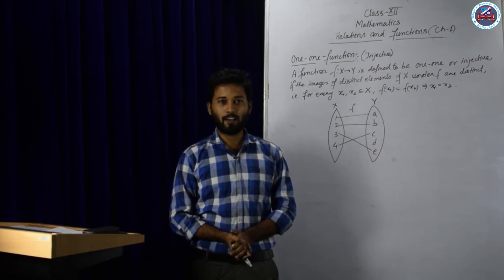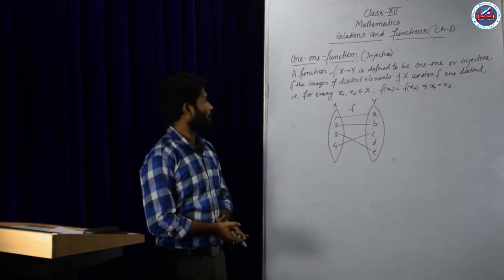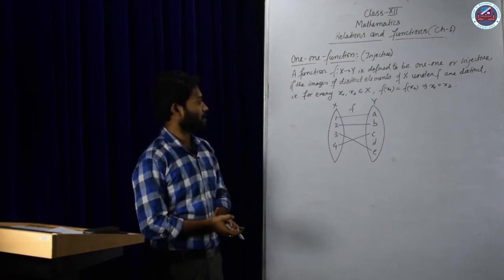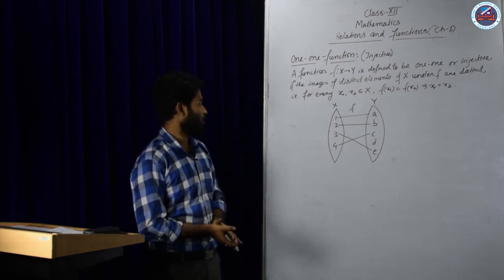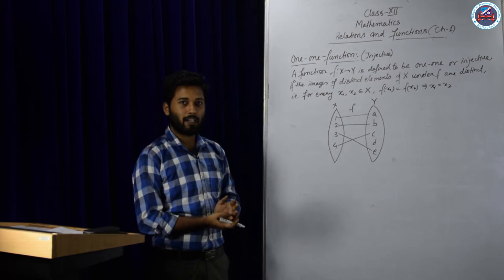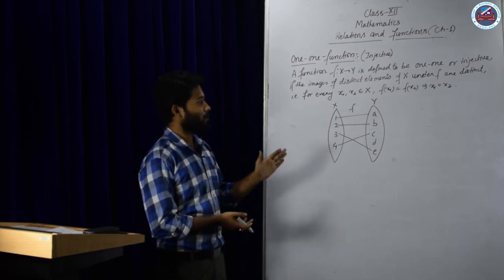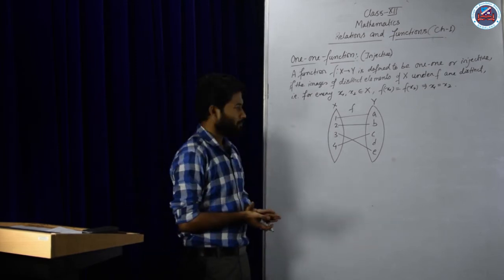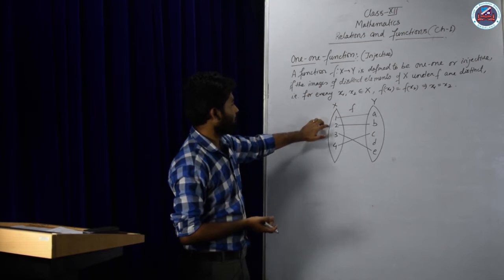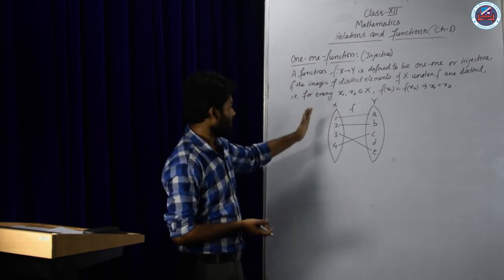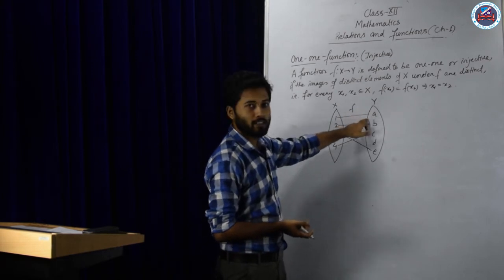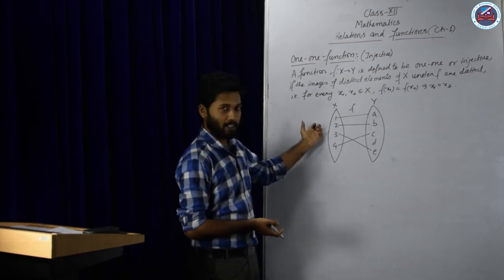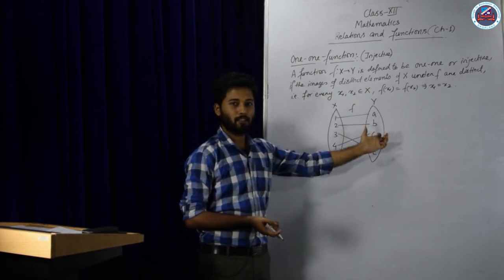Next, we have the one-to-one function. A function f from X to Y is defined to be one-to-one or injective if the images of distinct elements of X under f are distinct. That is, for every x1, x2 belonging to X, f(x1) equal to f(x2) implies x1 equal to x2. It means that every element of the domain must be connected to only one element of the co-domain. That means distinct elements of set A must be associated with distinct elements of set B.